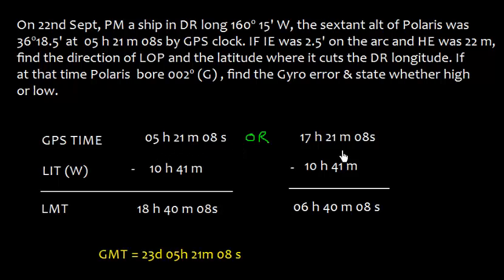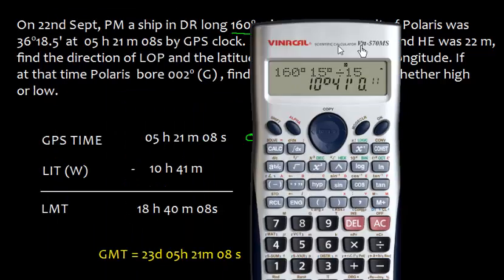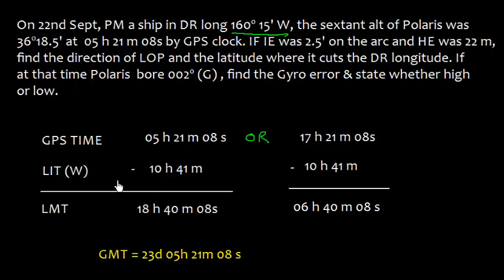Now we need to apply longitude in time, which is 160 degrees 15 minutes west. We convert this longitude into time by dividing by 15, so we get 10 hours and 41 minutes. If longitude is west, GMT is best and LMT is least, so we subtract.